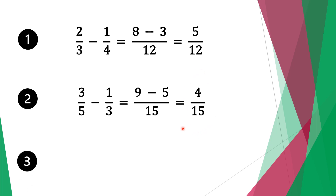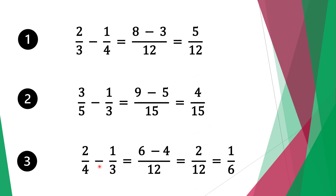Moving on to question three, we have two-quarters minus one-third. Again we have different denominators, so we multiply four by three to get twelve. Twelve divided by four is three, three times two is six. Move along the minus sign. Do the same for the second fraction: twelve divided by three is four, four times one is four.